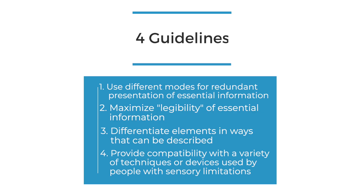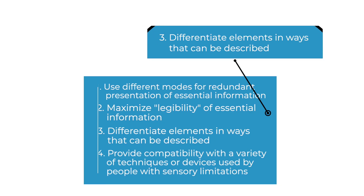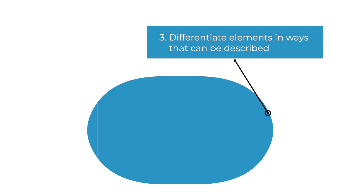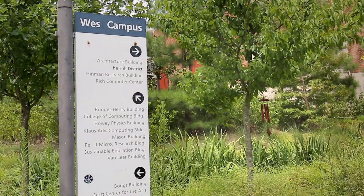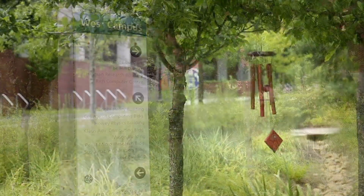The third guideline of perceptible information is to differentiate elements in ways that can be described — for example, make it easy to give instructions or directions. We created a wind chime project: a solar wind chime that was basically a wayfinding system that was sound-activated. For blind users or navigators on our campus, they could receive audio cues to tell them when they're at certain intersections on campus.